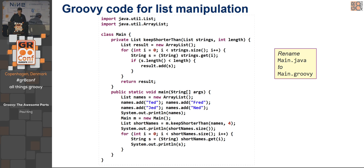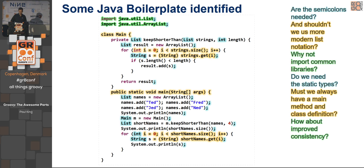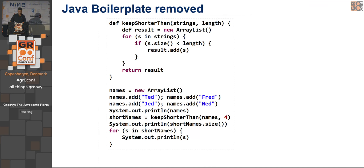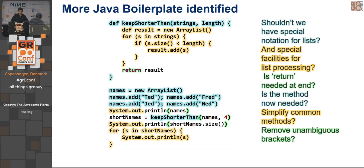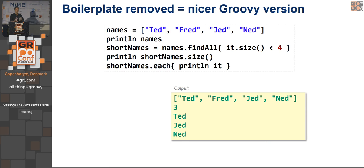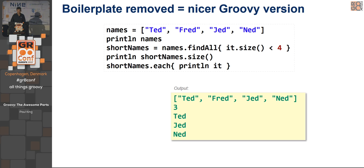You can start using Groovy with not much knowledge about its features, and as you become more familiar with the idioms, you can make things more Groovy-style. We can remove boilerplate: semicolons, redundant typing information, inconsistency, and common library imports. Even so, there's still boilerplate we can remove. This is the kind of thing you'd typically write if writing that same program from scratch — much shorter, much easier to read. We spend a lot more time reading and maintaining code than writing it.